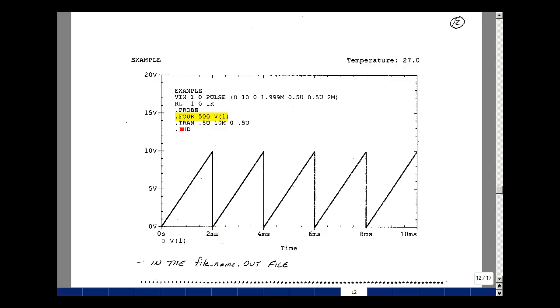I'm going to use the .Fourier command, .Four, fundamental frequency is 500, and I'm looking at node voltage 1.